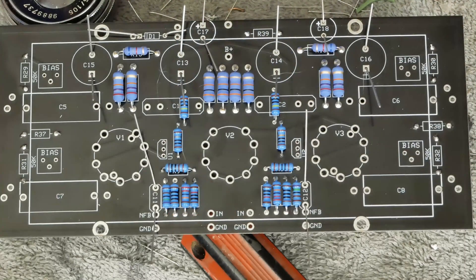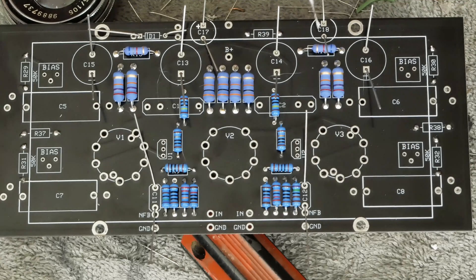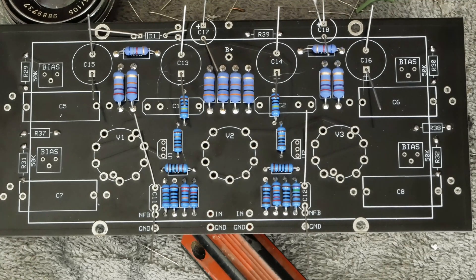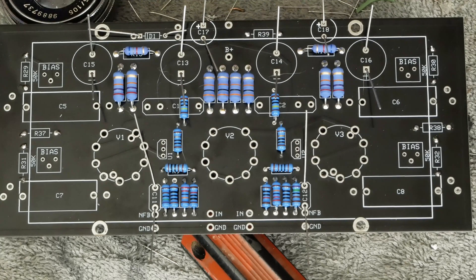And don't get confused on these two caps that are on the bias supply. The positive side of the cap is going to the ground because it's negative voltage going to the bias. So again, don't get confused by that. So let's solder these guys in.